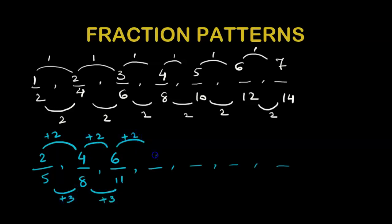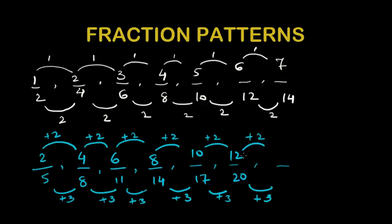So 6 plus 2 gives us an 8, 11 plus 3 gives us 14, and so on. Plus 2 gives us 10, 14 plus 3 gives us 17, and we get 12 over 20. Similarly when we continue the pattern we get 14 over 23.